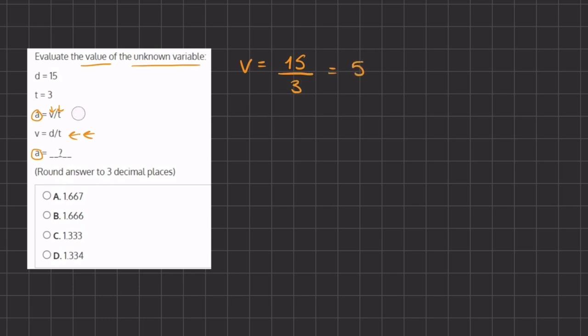Now we can go back to this expression to solve for a. So we have a equals v, which we just found out is 5, divided by t which is 3.